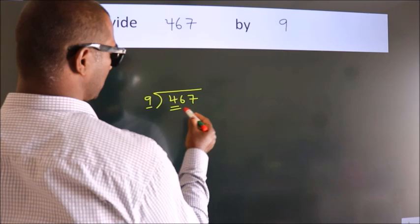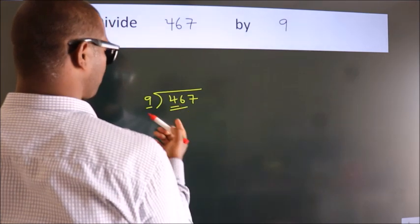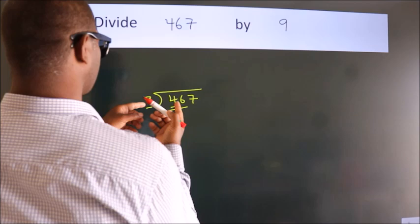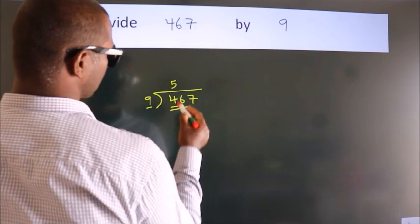so we should take two numbers: 46. A number close to 46 in the 9 table is 9 times 5, which is 45.